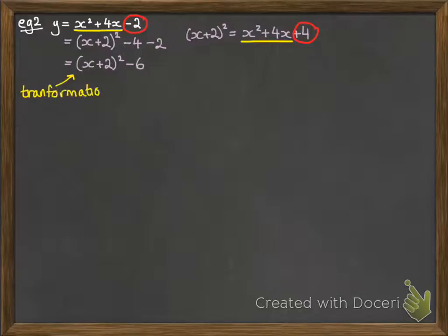Now this gives us the transformation of x². So the +2 gives us a 2 to the left and the -6 tells us to shift it 6 down.